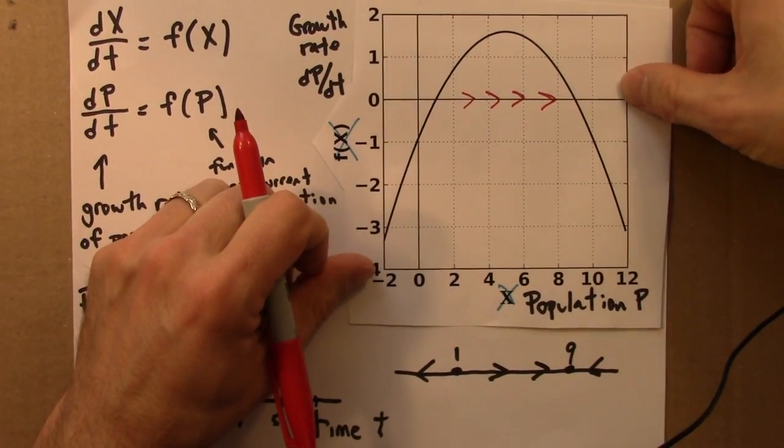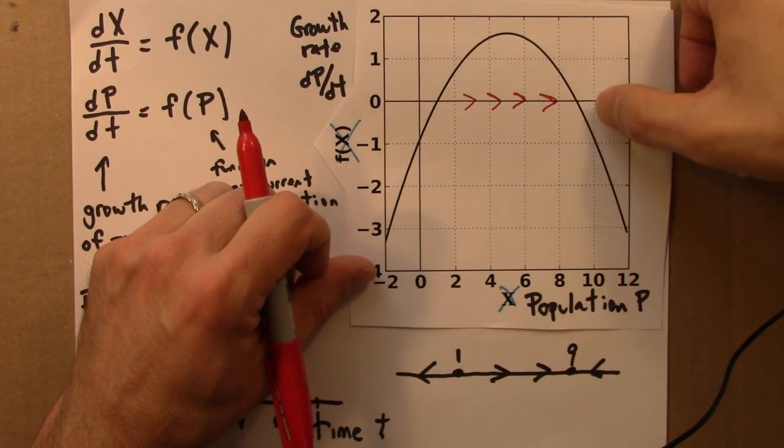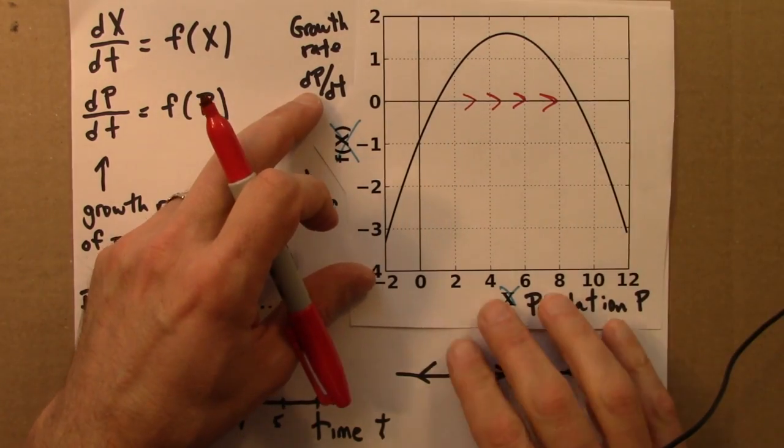If I'm over here, the population will get smaller because the growth rate is negative. The value of this function, dp/dt, is negative.